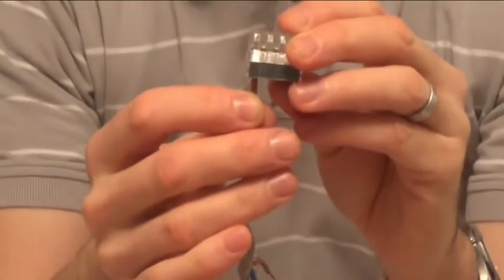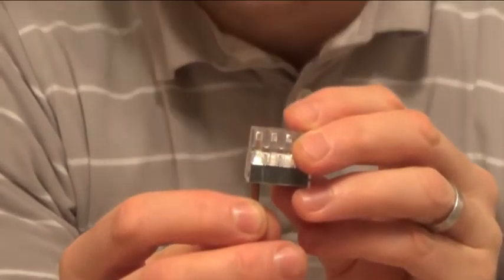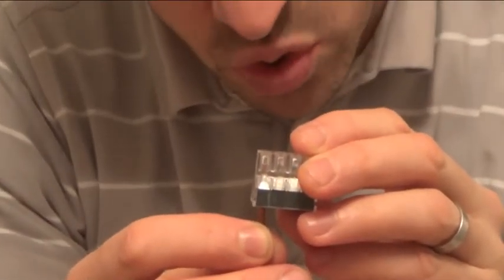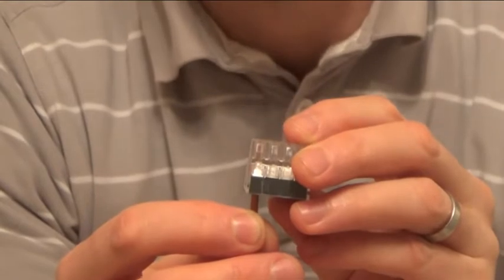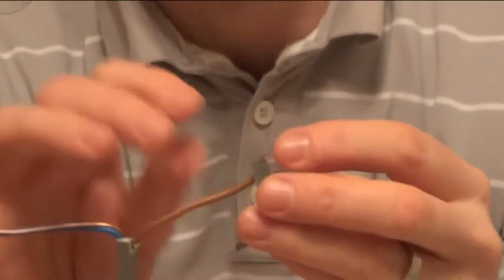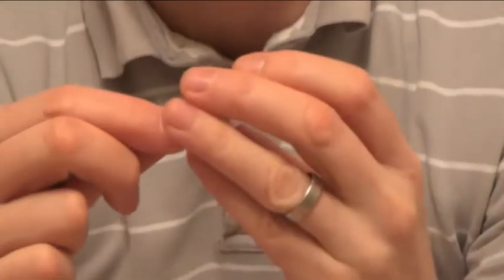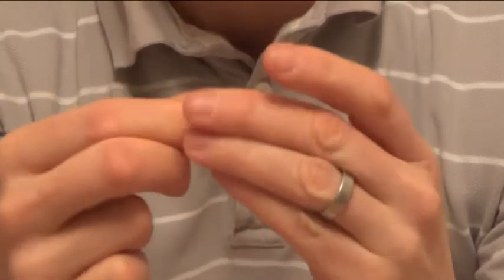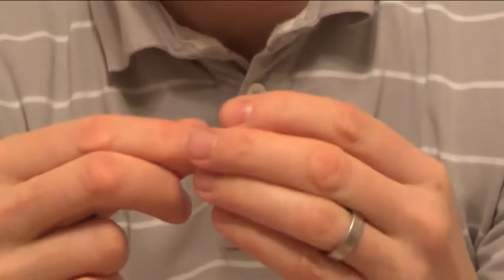Again, the measurements are all on here again. I think these ones, it says to strip back. These ones are 12 millimeters you have to strip back. Obviously, I've just stripped back 10 millimeters because I used it on the other one. But you can see it still made the contact. But you might as well do it 12 millimeters because that's what it tells you to do.